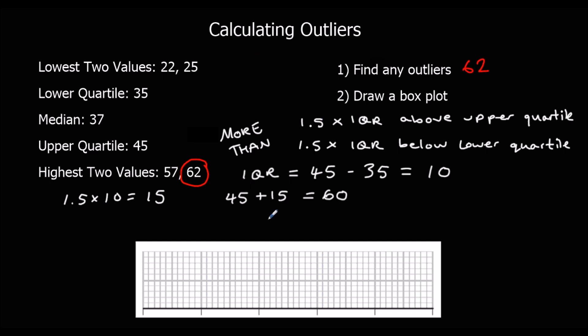How about the lower quartile? Any number more than 15 below the lower quartile — 15 below 35. So 35 minus 15 is 20. And there are no numbers below 20. So there's only one outlier, and that is 62.